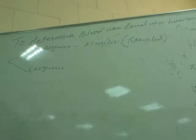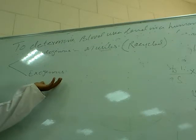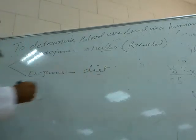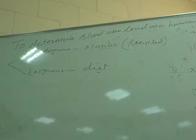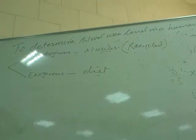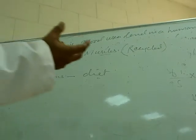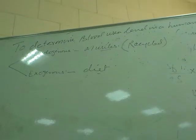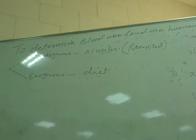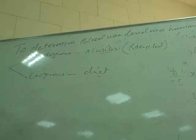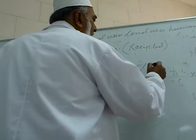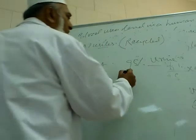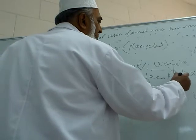The major contribution for urea comes from the exogenous source, where protein is obtained from our diet. Whatever protein we take — whether meat, beef, pulses, or anything else — it is the major contributor for urea synthesis. Out of the urea excreted from the body, 95% is excreted in urine and the remaining 5% is excreted in fecal matter.